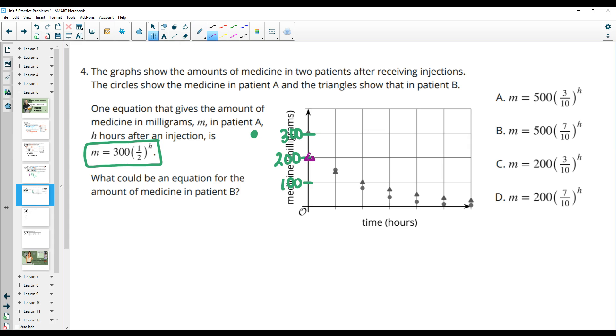So then you know that this one is starting at 200. So patient B starts at an initial value of 200. So we know that A is wrong and B is wrong because they start at 500. So then we just have to decide if our decay rate is 3 tenths or 7 tenths. So what I'm going to do is just plug in one. So here's one. So I'm just going to plug in one to this one. And if I do 200 times 3 tenths to the first power, that gives me about 60.